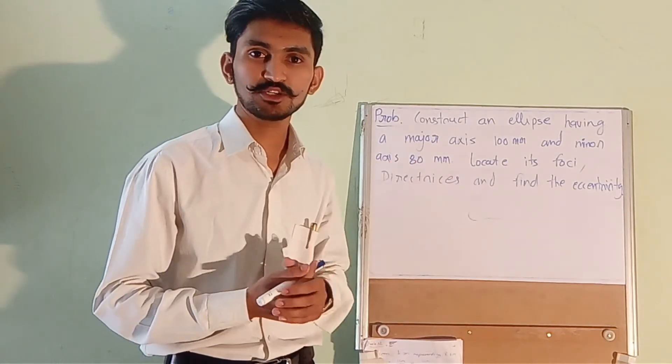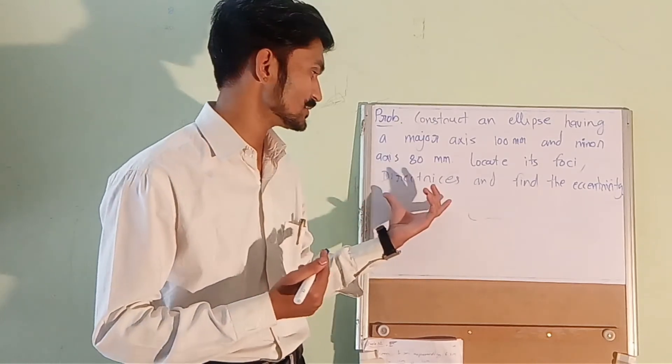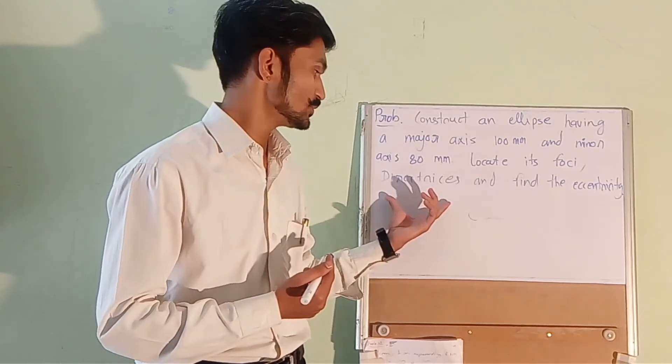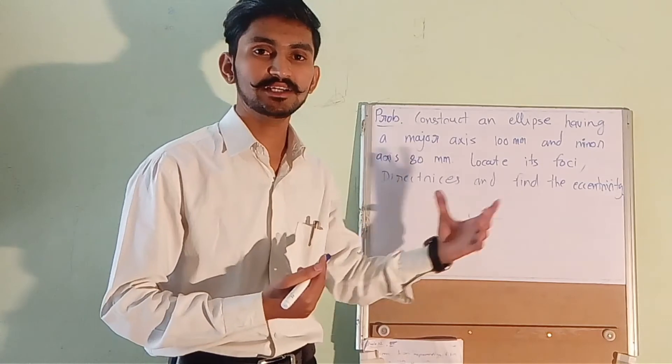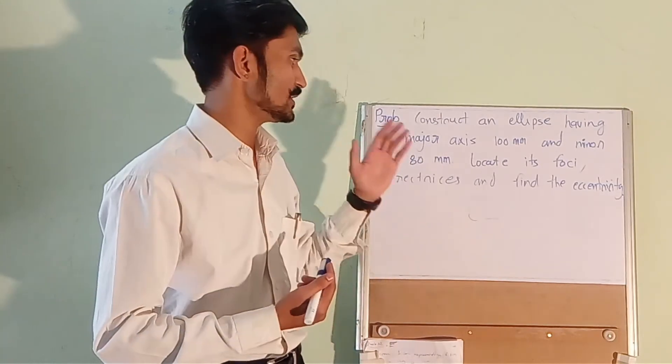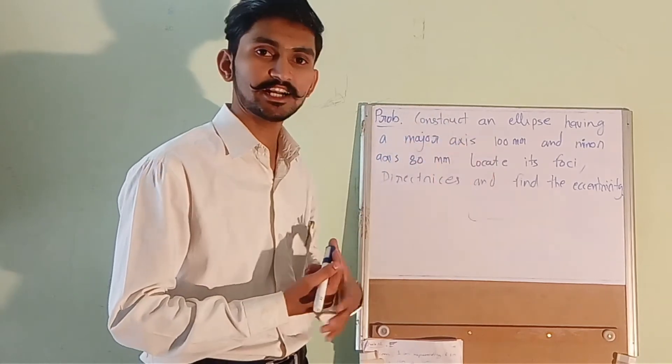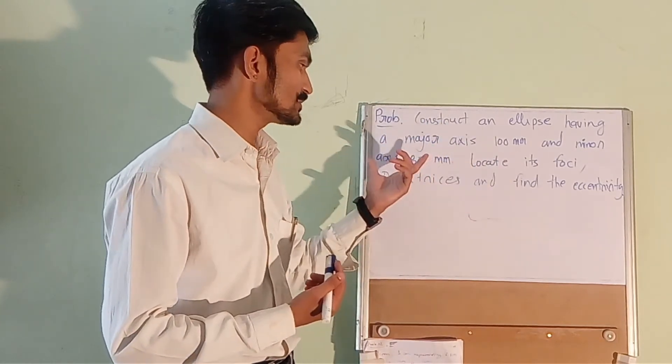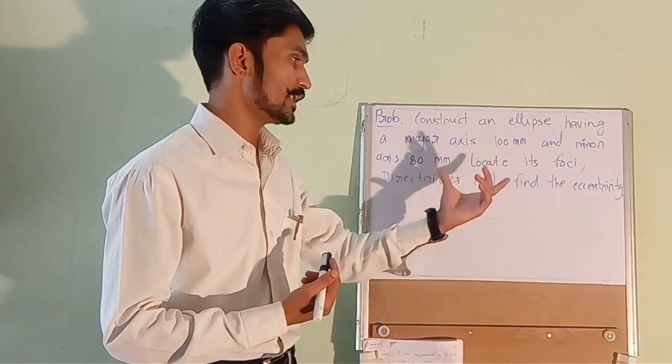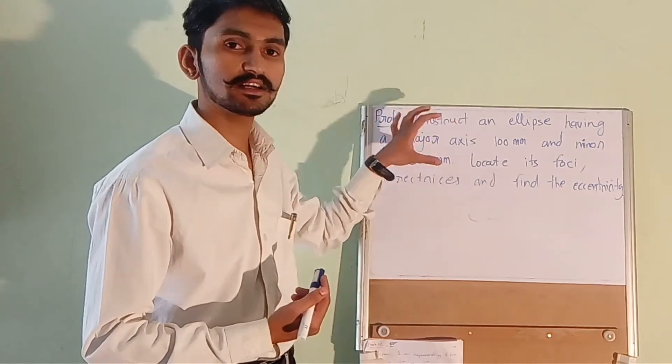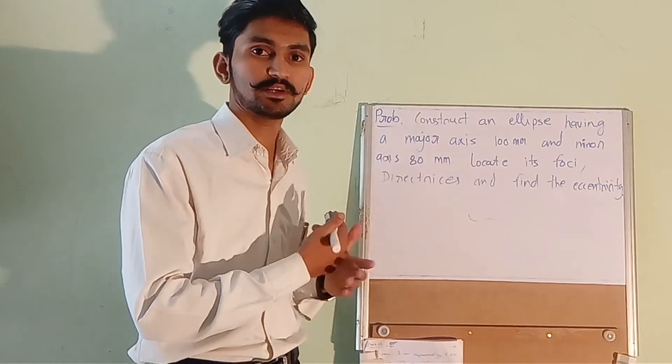This question is pretty similar to the previous one. The only difference is in this question they have asked us to draw the directrices and find the eccentricity. The question is construct an ellipse having a major axis as 100 mm and minor axis 80 mm long. Locate its foci. So till here the question is pretty similar to the previous one.